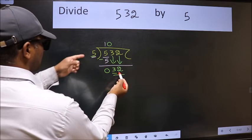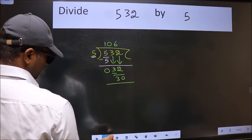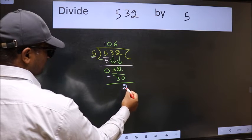A number close to 32 in the 5 table is 5, 6, 30. Now we should subtract. We get 2.